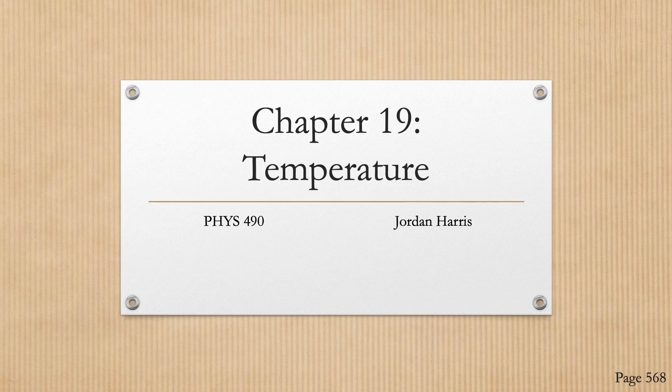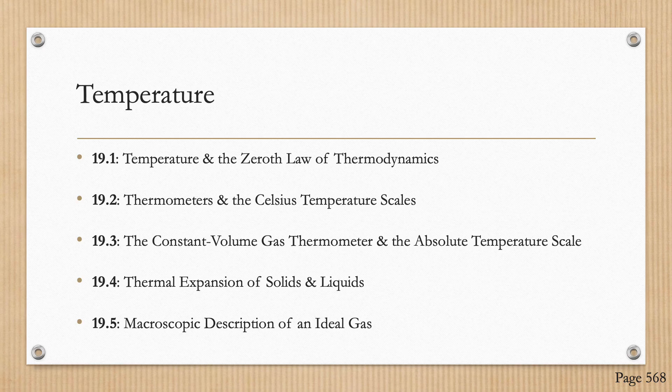Hello friends, in this video we are going to be discussing chapter 19 on temperature. This chapter concludes with a study of ideal gases on the macroscopic scale, and we are concerned with the relationships among such quantities as pressure, volume, and the temperature of a gas. Topics include temperature and the zeroth law of thermodynamics, thermometers and the Celsius temperature scale, the constant volume gas thermometer and the absolute temperature scale, thermal expansion of solids and liquids, and the macroscopic description of an ideal gas.